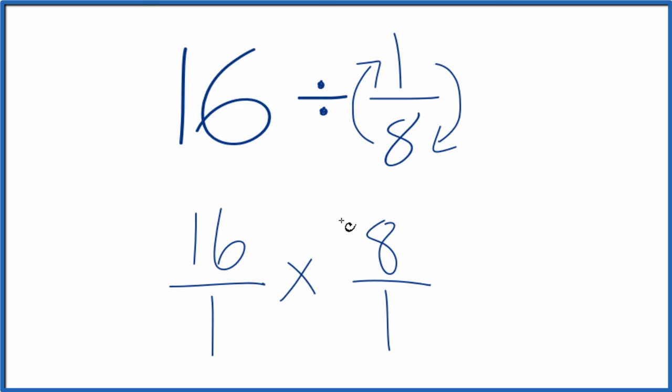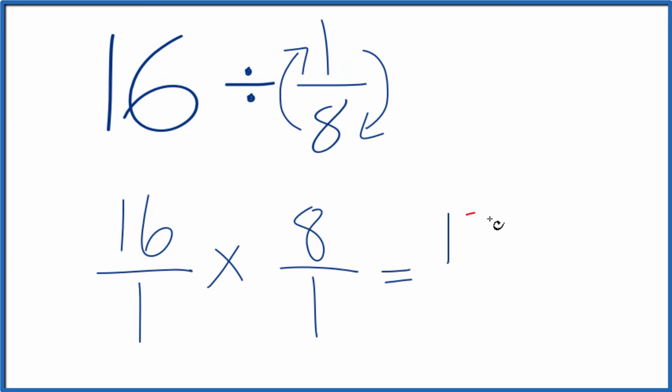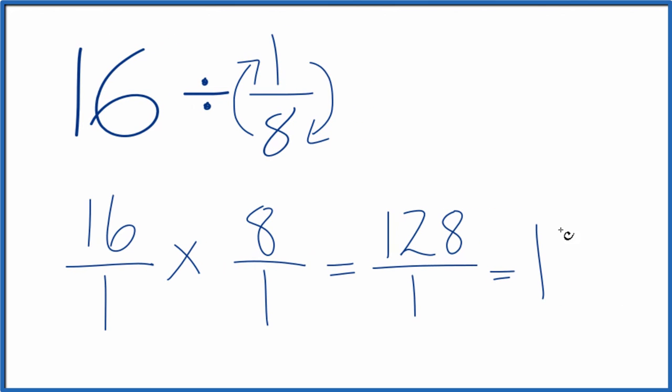When we multiply fractions, we just multiply the numerators and then multiply the denominators. That gives us our answer. 16 times 8, that's equal to 128. And 1 times 1 is equal to 1. 128 over 1, that's just 128.